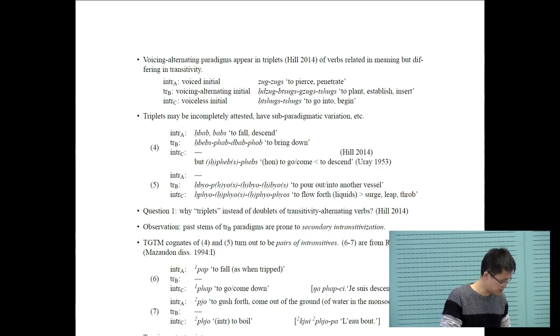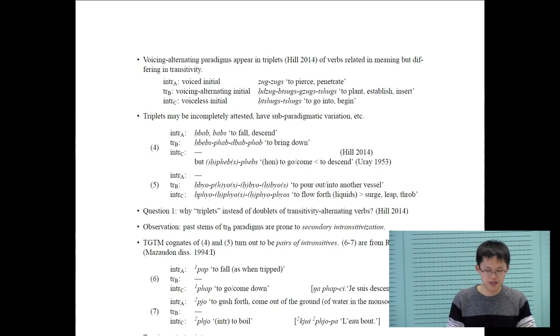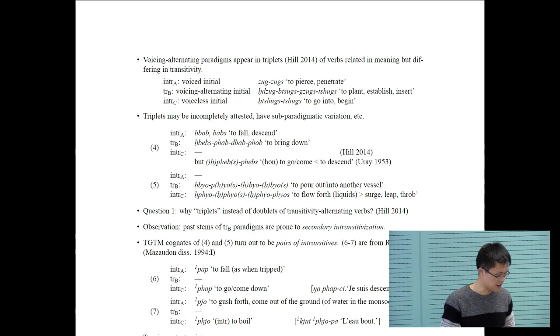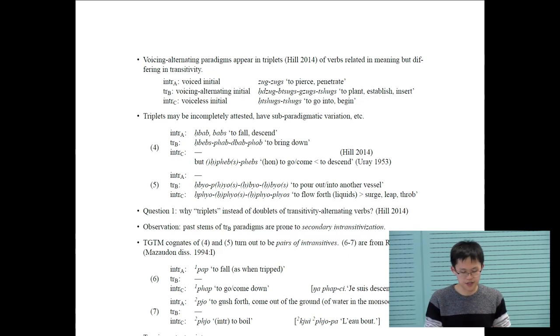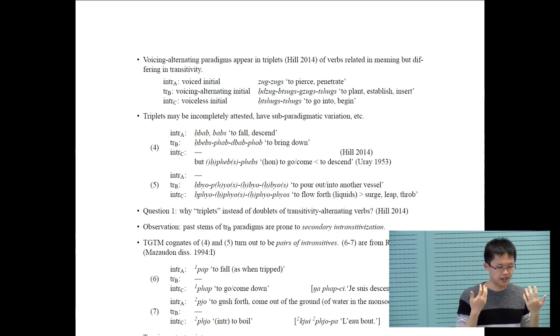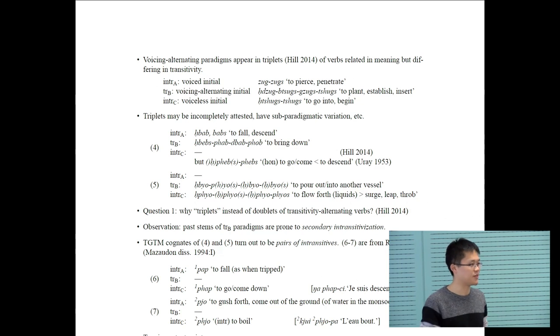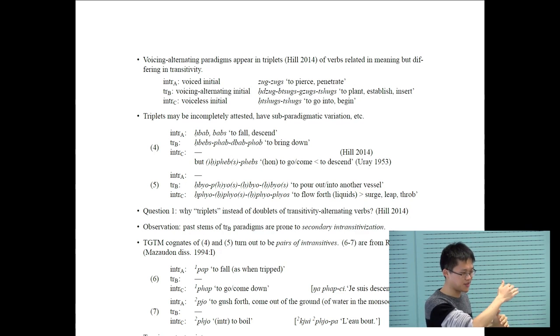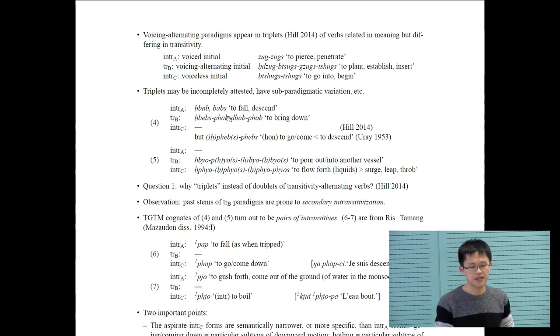Written Tibetan transitive paradigms, some of them, a small set, show an interesting voicing alternation in the root initial. In the past and imperative stem, you have the voiceless variant of the onset. But in the present and the future stem, you have the voiced variant of the onset. The other puzzle is this set of voicing alternating transitives often appear in triplets, instead of doublets. You have an intransitive A, transitive B, and intransitive C.